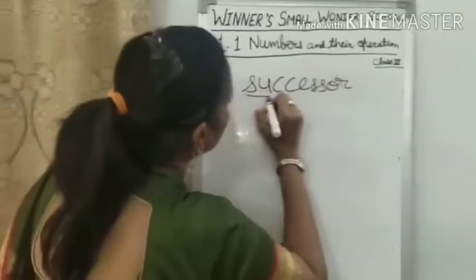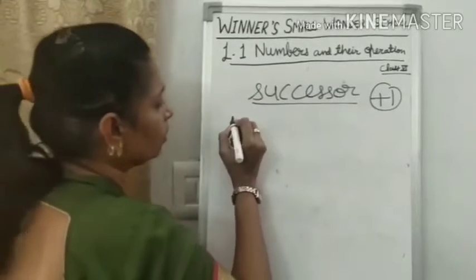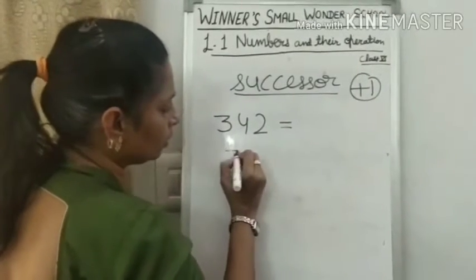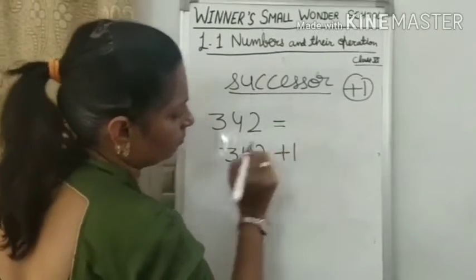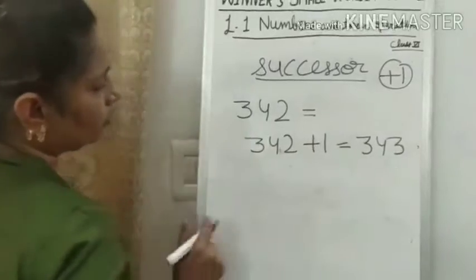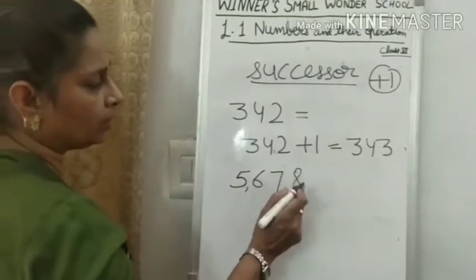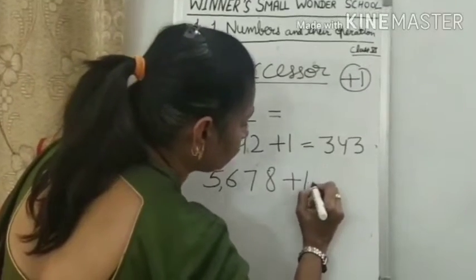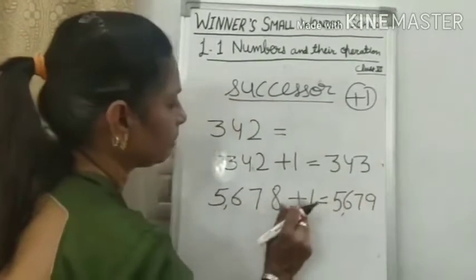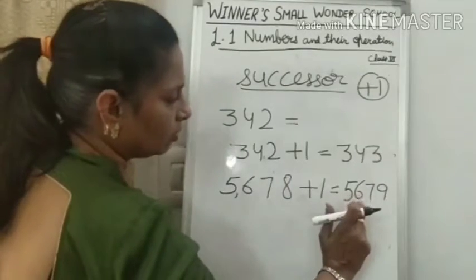Successor means plus 1. Given any number, add plus 1 and the answer is the successor. For example, the number 342: 342 plus 1, the answer is 343. Second example is 5,678: 5,678 plus 1, the answer is 5,679.